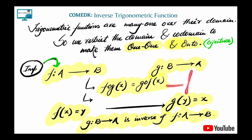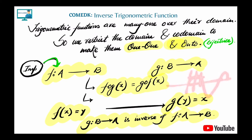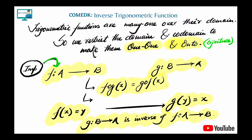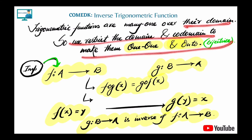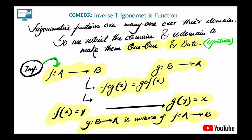We are dealing with trigonometric inverse functions. All trigonometric functions are many-one - for one value of x we get multiple y values. For example, y = 1/2 is paired with multiple x values. So we needed to restrict the domain and co-domain to make them one-one and onto, so that the inverse of the function will exist. That's why we'll show how for sine inverse x we restricted the domain.